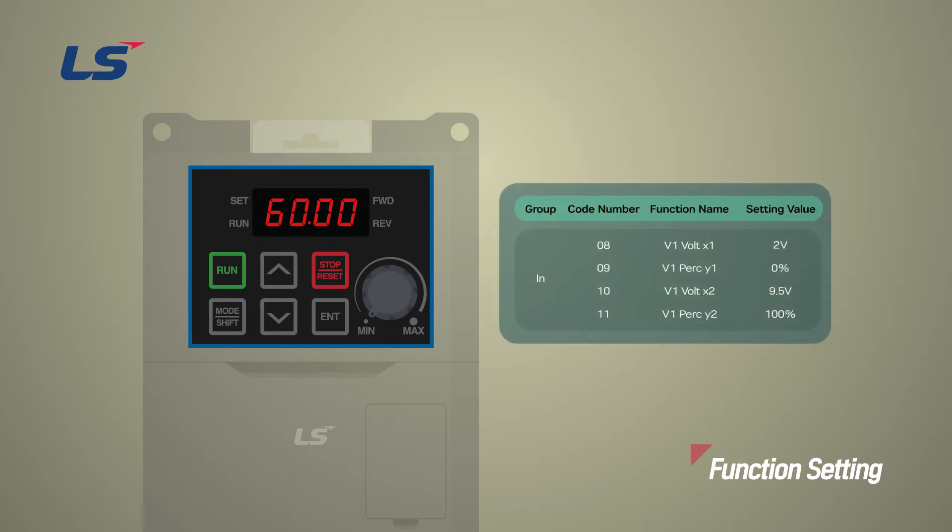In this video, we'll program the inverter to run 0 Hz at 2 volts, 60 Hz at 9.5 volts. First, by using the direction keys, set number 1 FX RX 1 in driving group DRV, set number 2 V1 in FRQ, and move to ingroup.